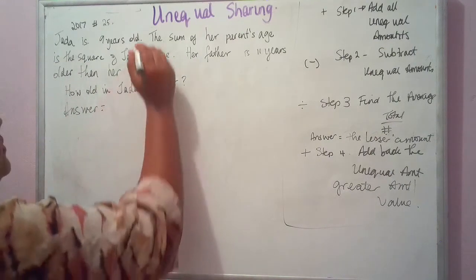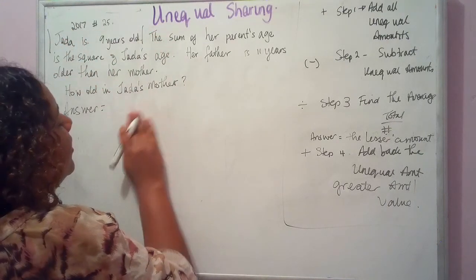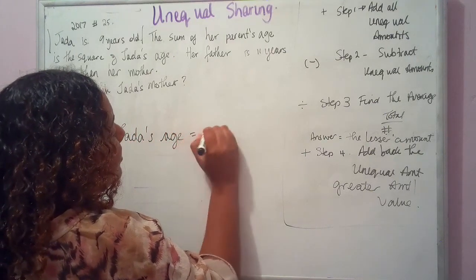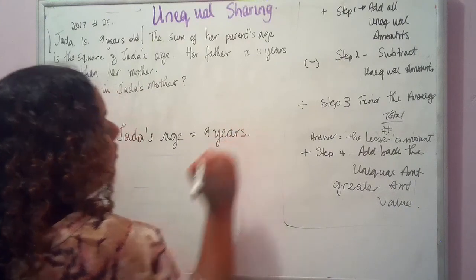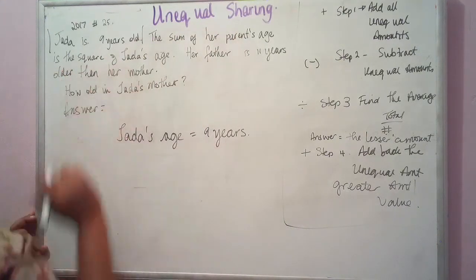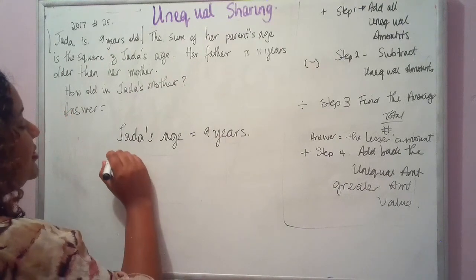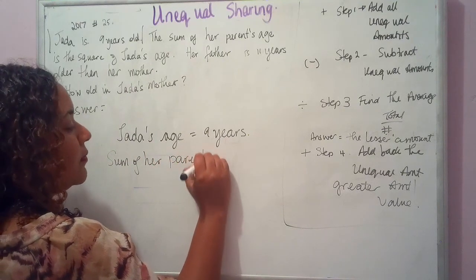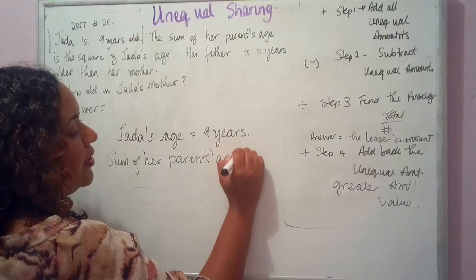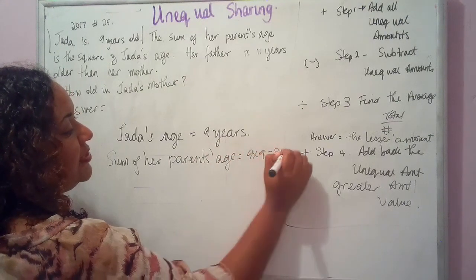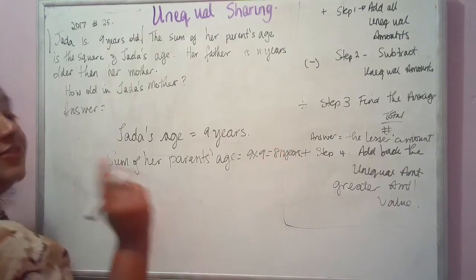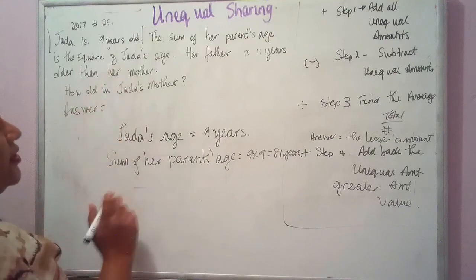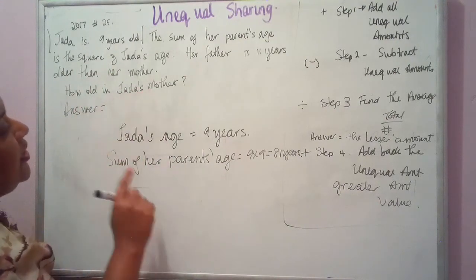We work through the information line by line. Jada's age = 9 years. The sum of her parents' ages is the square of Jada's age, so the sum of her parents' ages = 9 × 9 = 81 years. This is where we get into the unequal sharing part: her father is 11 years older than her mother.